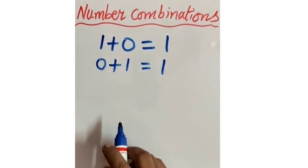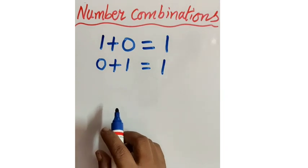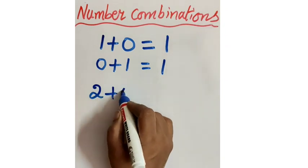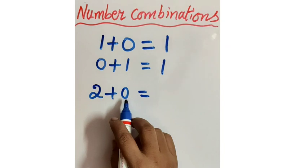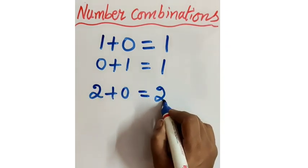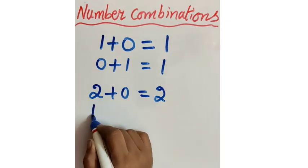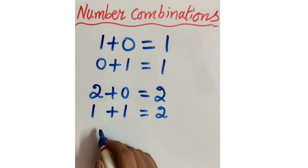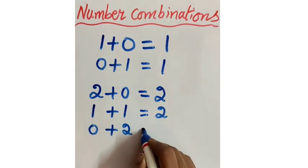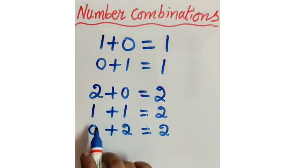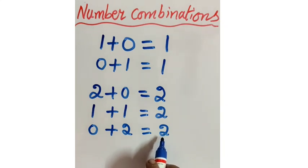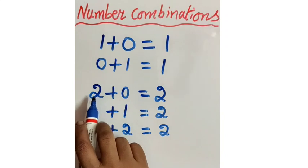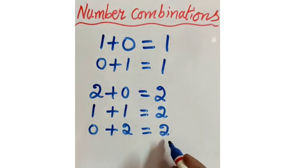Now let us make combinations of 2. See here: 2 plus 0 equal to — come on, tell children — 2 plus 0 equals what? Remember the addition fact: if we add 0 to any number, we get the same number. 2 plus 0 equal to 2. Now, 1 plus 1 is also 2. And 0 plus 2 equal to 2. If we interchange their places, we get the same answer. We can add the numbers in any order — that is the second fact of addition. So 2 plus 0 equal to 2, or 0 plus 2 is also equal to 2.